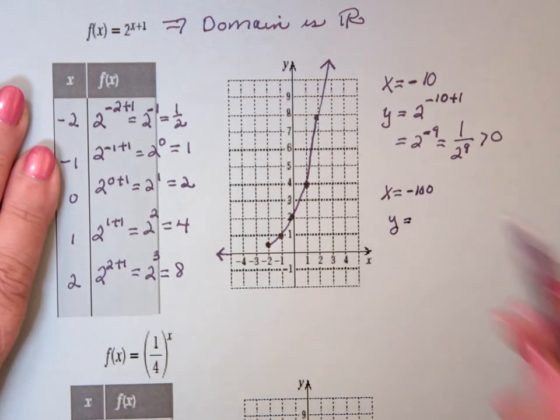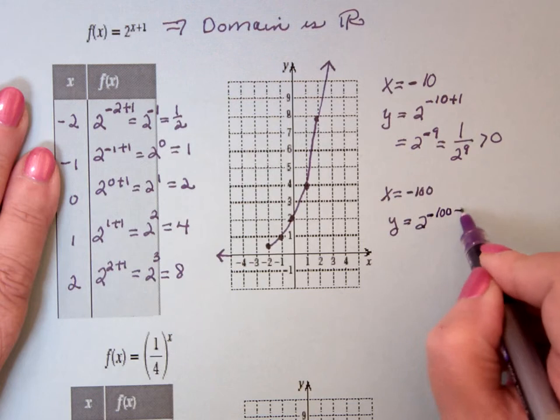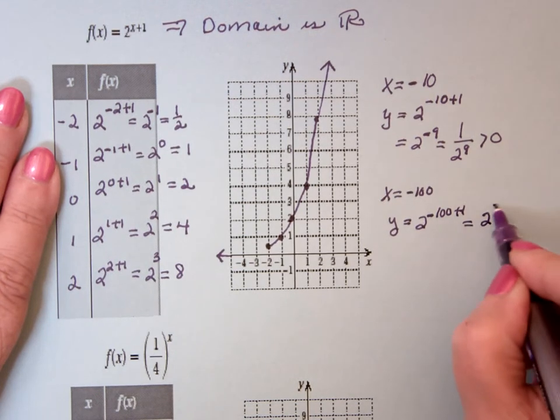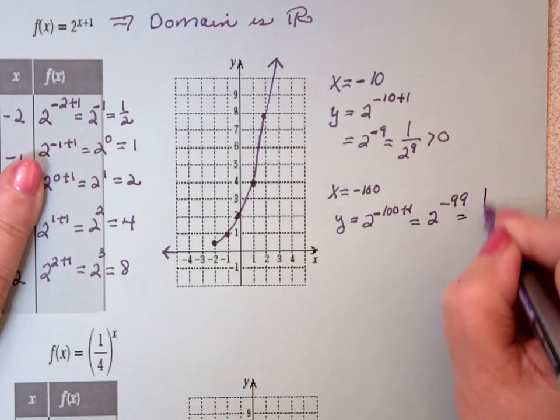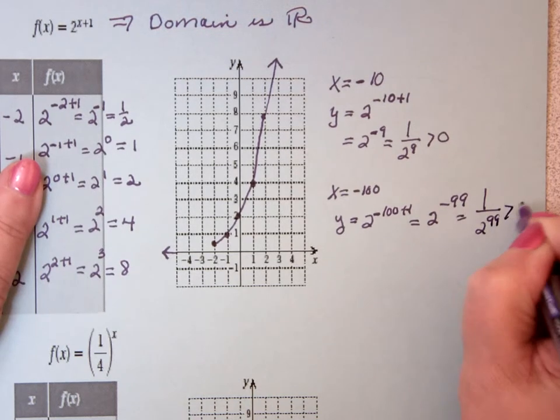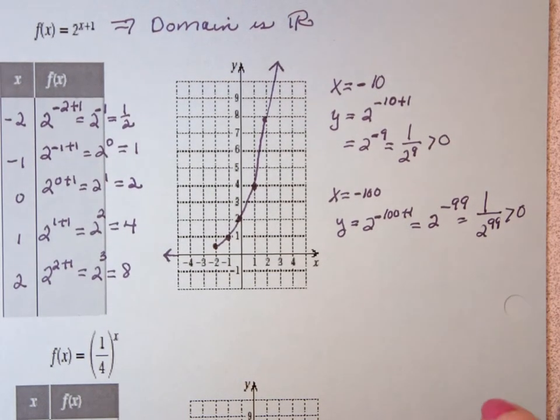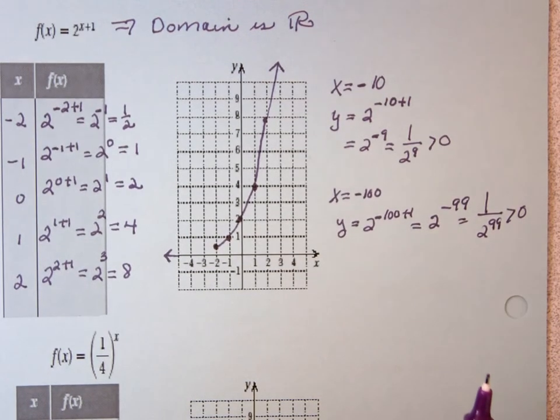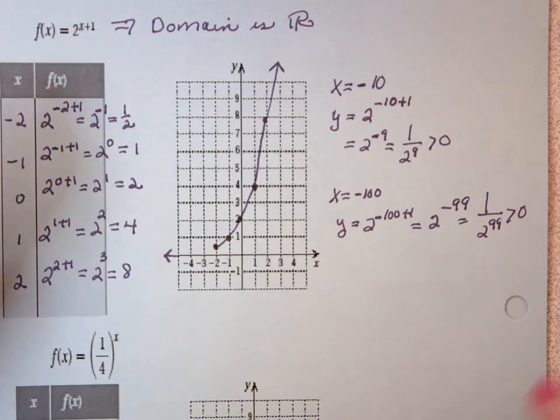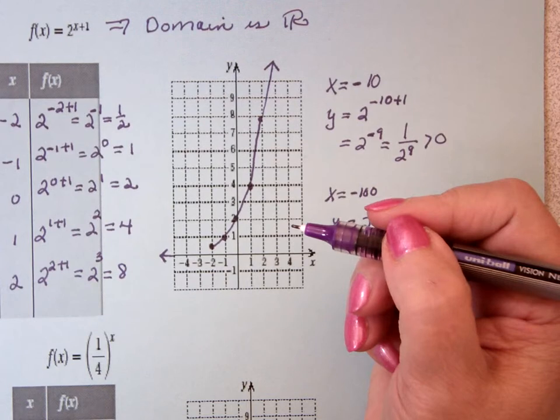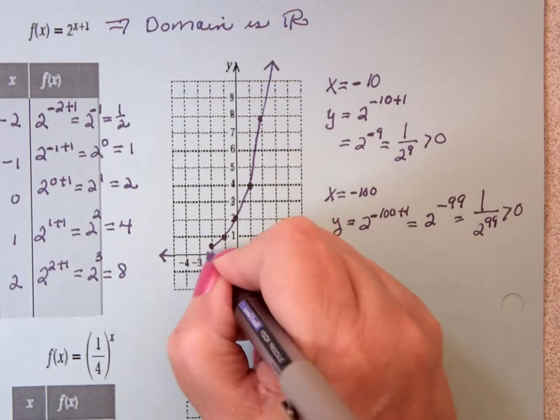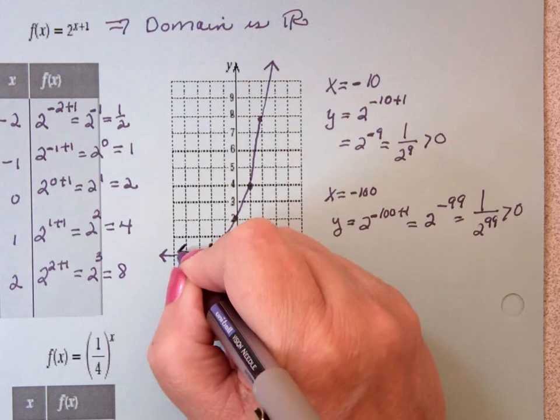If I would say x equal negative 100, then y would be equal to 2 to the negative 100 plus 1, which would be 2 to the negative 99, which was 1 over 2 to the 99. That's still positive. So you give me any negative number, I would add 1 to it, so it would be 1 less that I started out with. It would be negative. It would be 1 over that number. It becomes positive. So what this tells me is, as this comes down, it never crosses the x-axis. It's always positive.